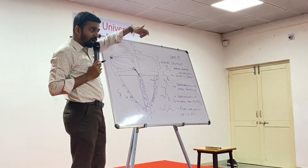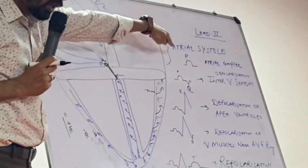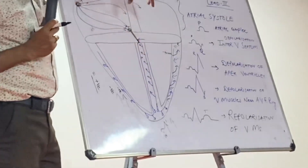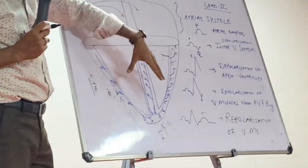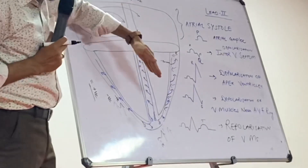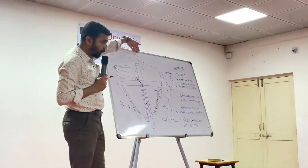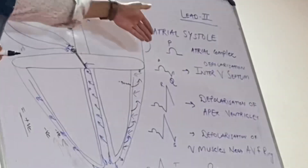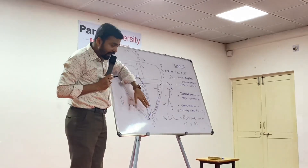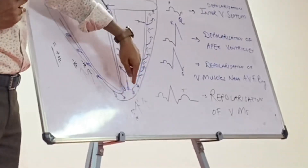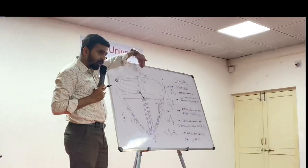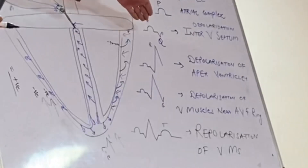The atrial complex we termed as P wave. Then the impulse goes down and the interventricular septum gets depolarized. The direction of the fibers is in the opposite direction of lead 2, therefore we get a negative wave which is a Q wave. Then at the apex part, the direction is positive from above downwards, which is in the direction of lead 2, therefore we get a positive wave which is the R wave.